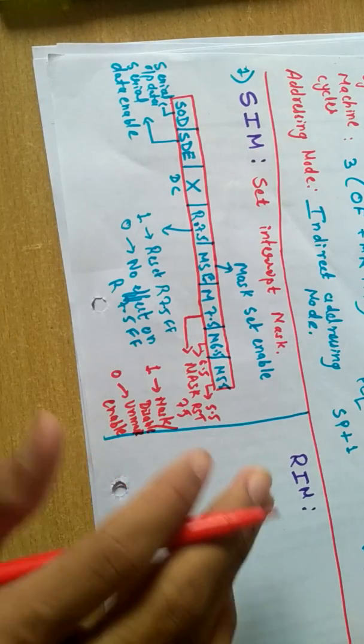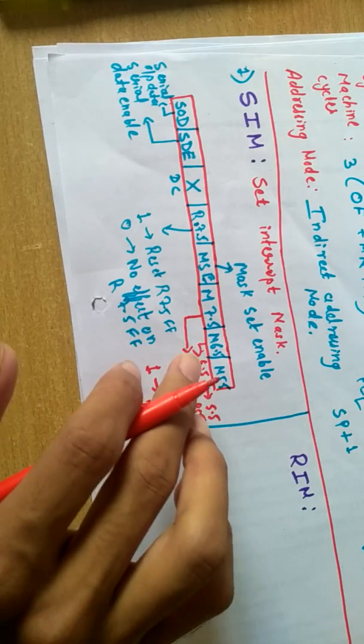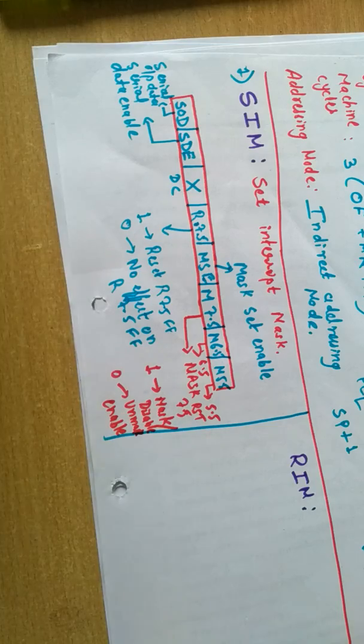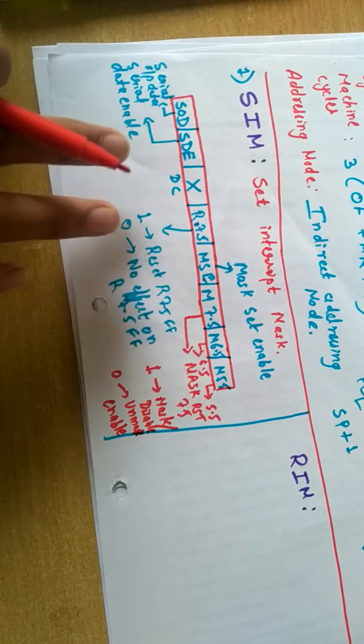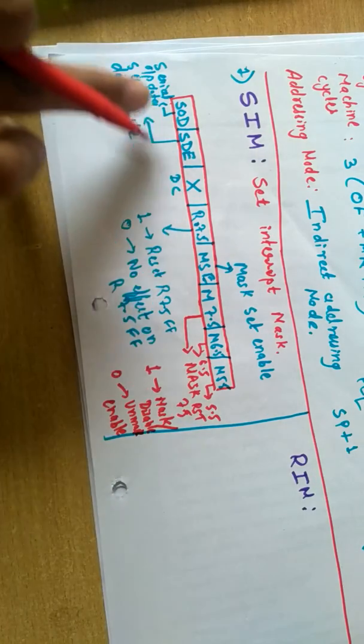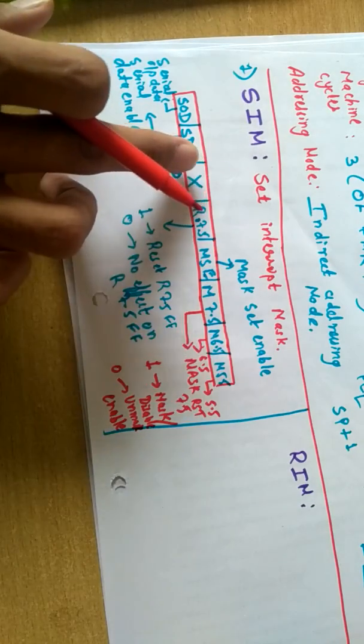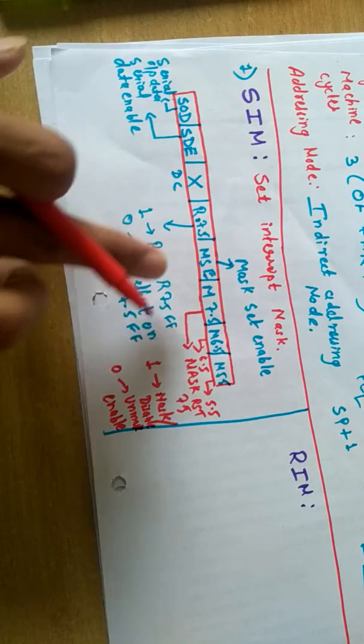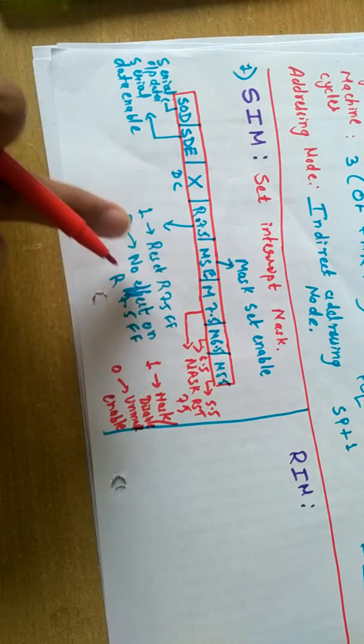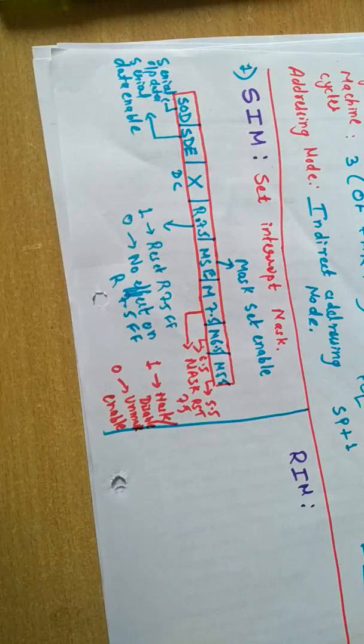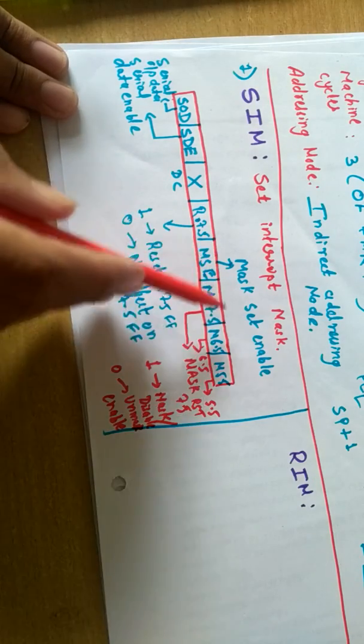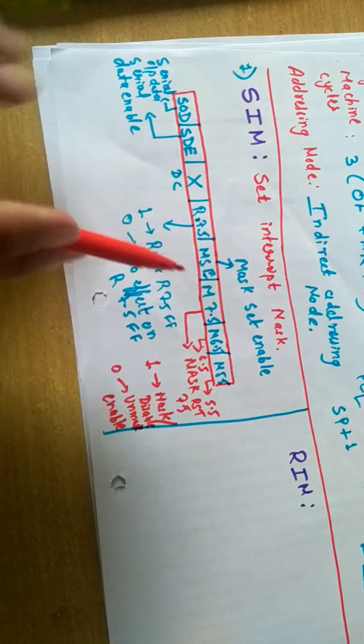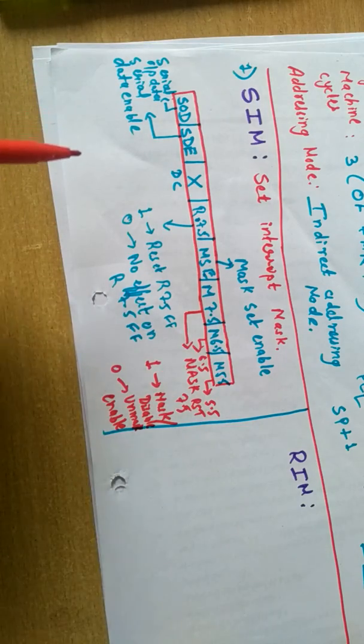What basically SIM instruction does: it sets interrupt mask and controls serial output data. In order to enable that, we have to use this SIM instruction. Then we can set or reset RST 7.5 flip-flop. This is mask set enable, so this bit should be one in order to mask.